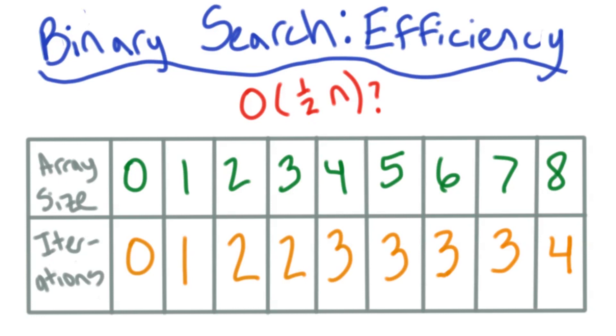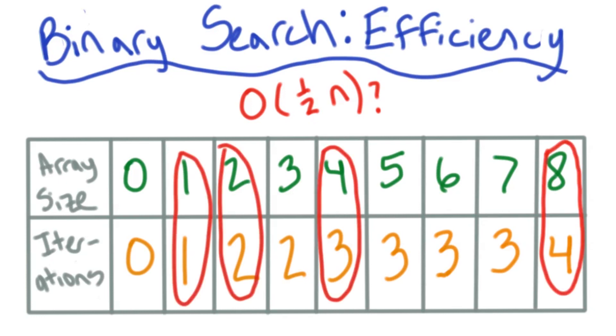Actually, now that I think about it, that actually looks true with the results in my table. Every time my array doubles in size, it takes an extra iteration of the algorithm to get through it.